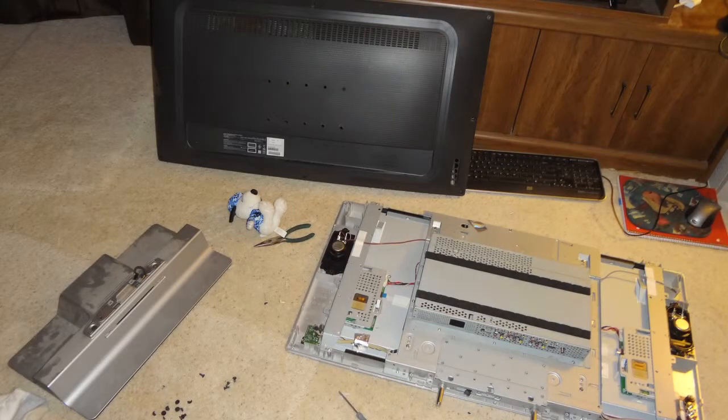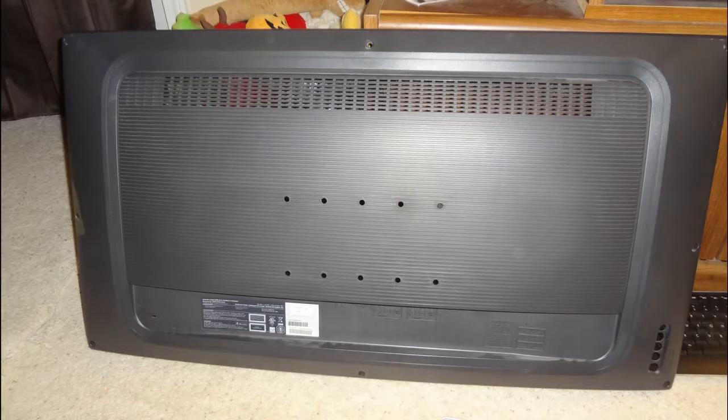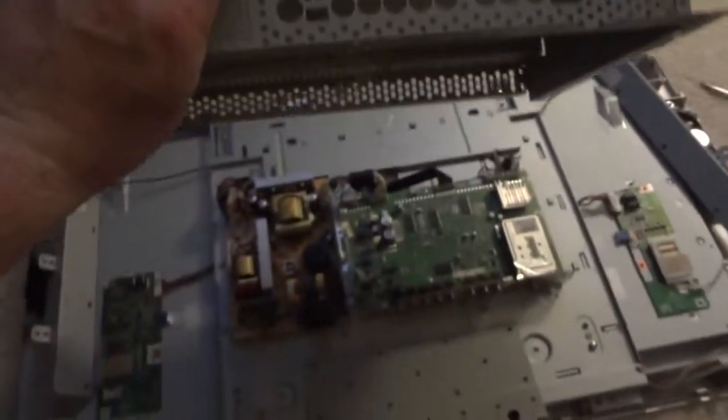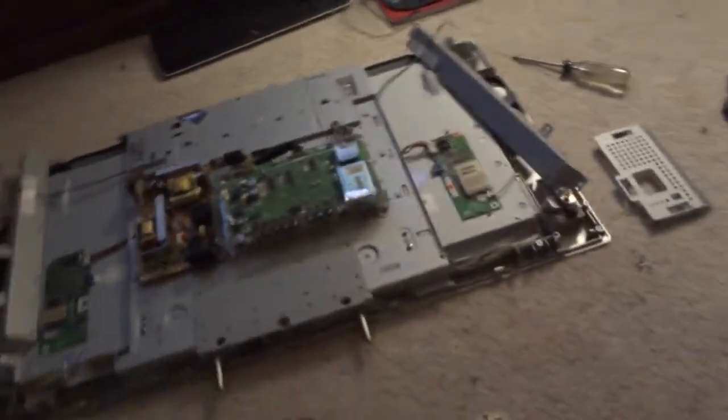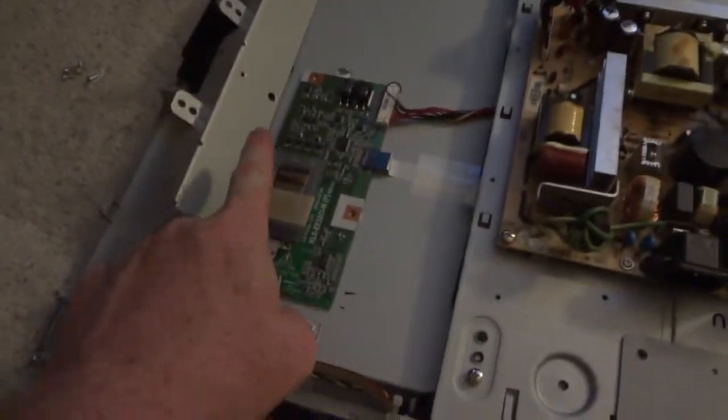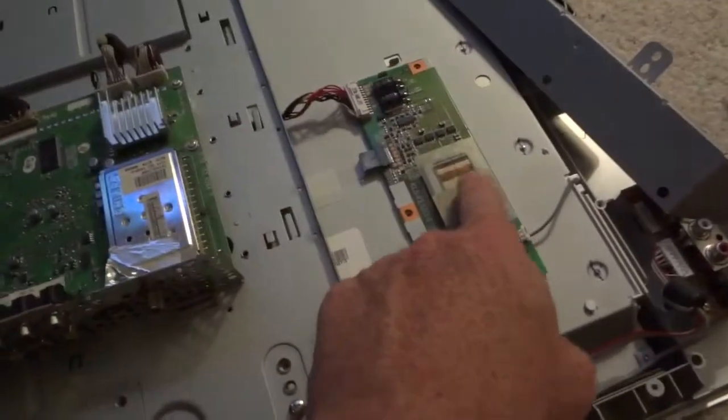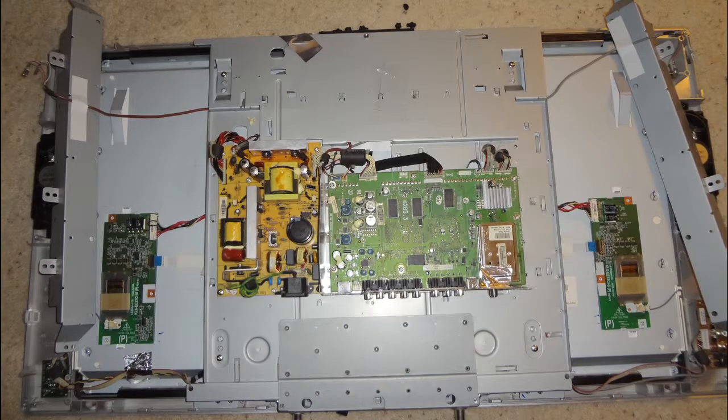I've taken apart the TV as you can see. The back panel, this piece right here, came off the top of the circuit board there. On either side here are the master and slave video cards.